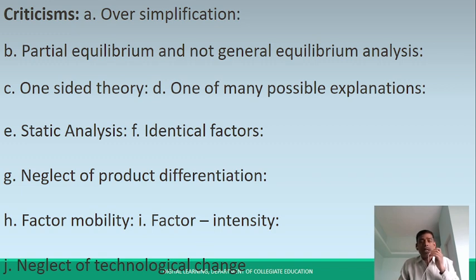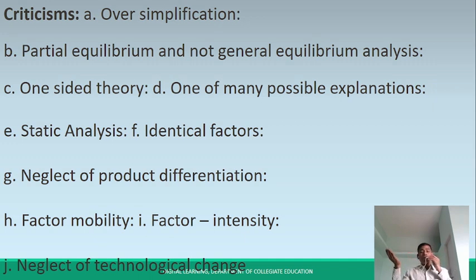It is one of many possible expressions — the theory only considers two persons or two nations. Another criticism is static analysis. Also, it assumes identical factors such as labor and capital.